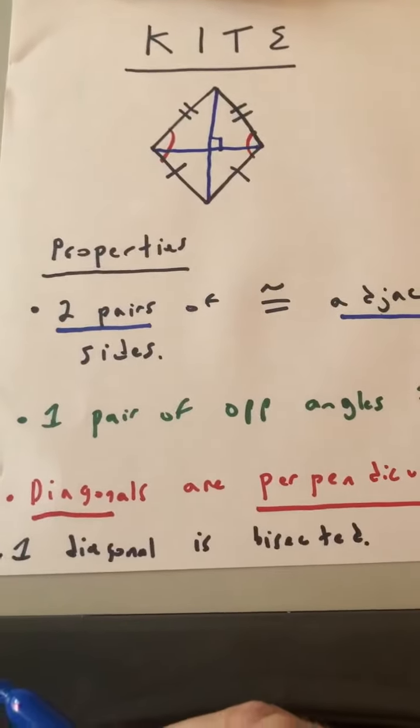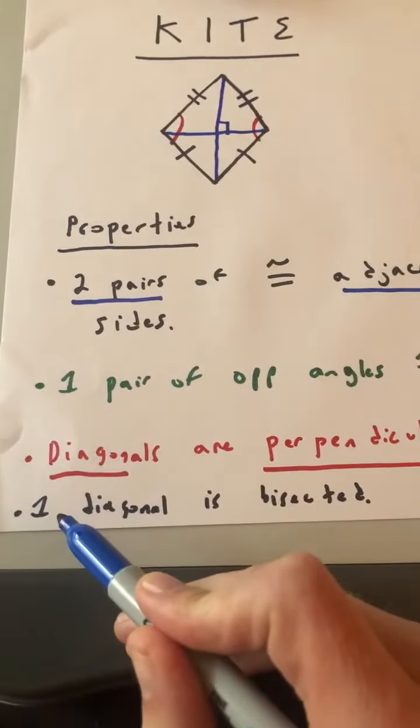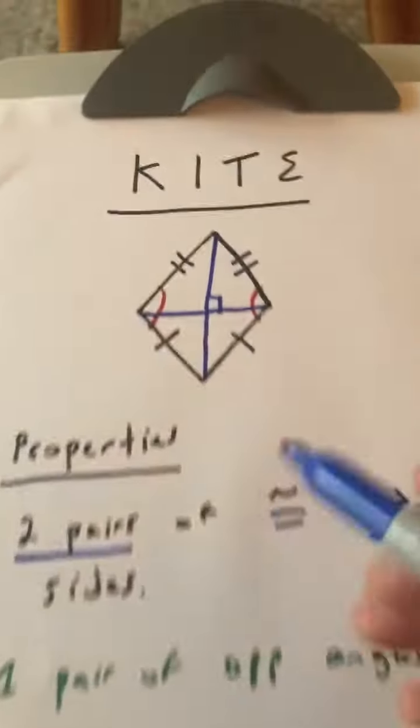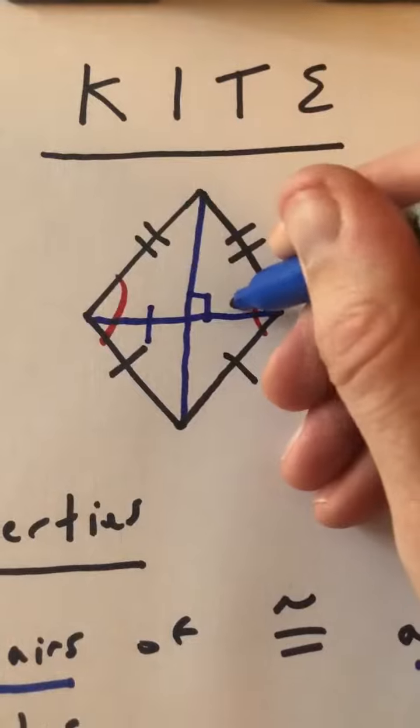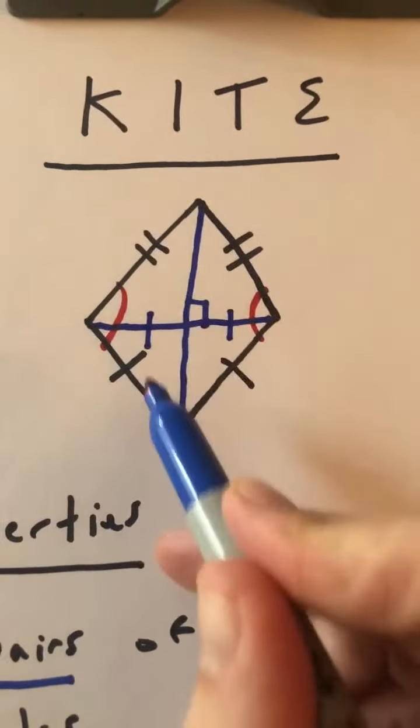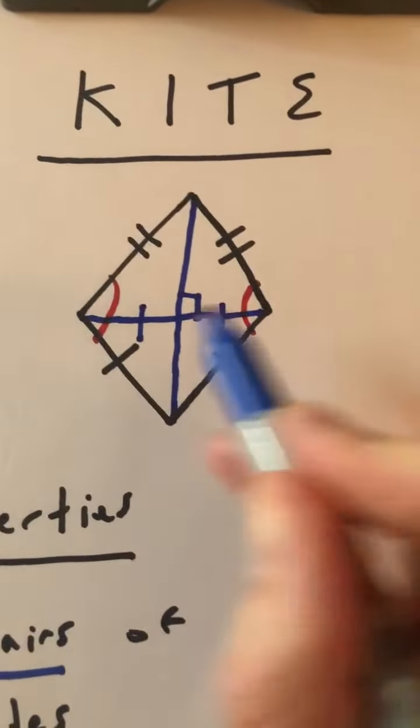And the last property that I have listed here is that there is one diagonal that's bisected. So if we look here, that would mean this and that are equal, because this diagonal bisects this diagonal.